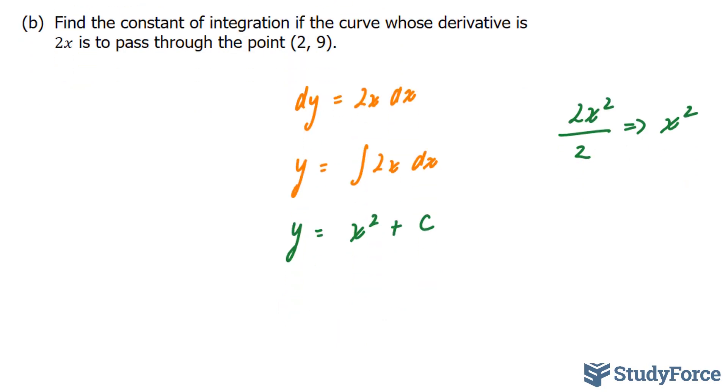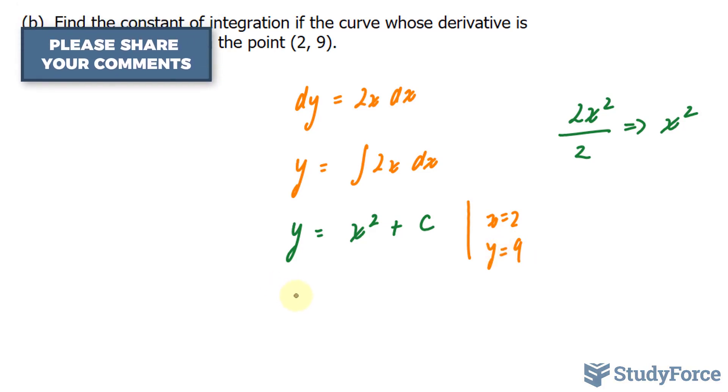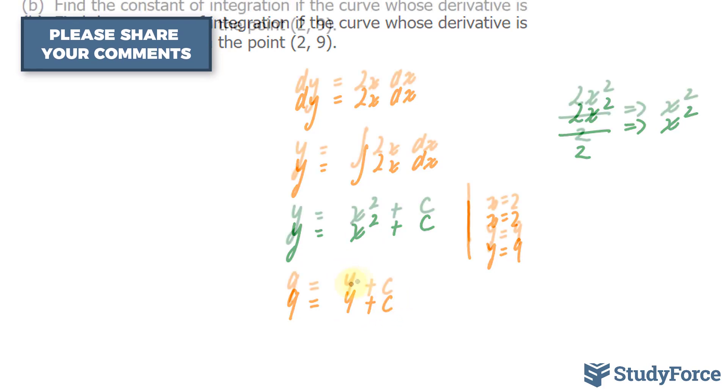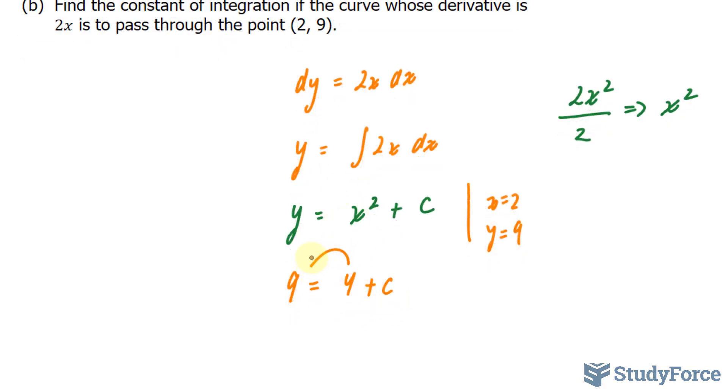So to find out C, I'll substitute x equals 2 and y equals 9 into here, and here's what I get. 9 equals 2 to the power of 2 is 4 plus C. Bringing this term over to solve for C, I end up with 9 minus 4 equals 5, and that's my C value.